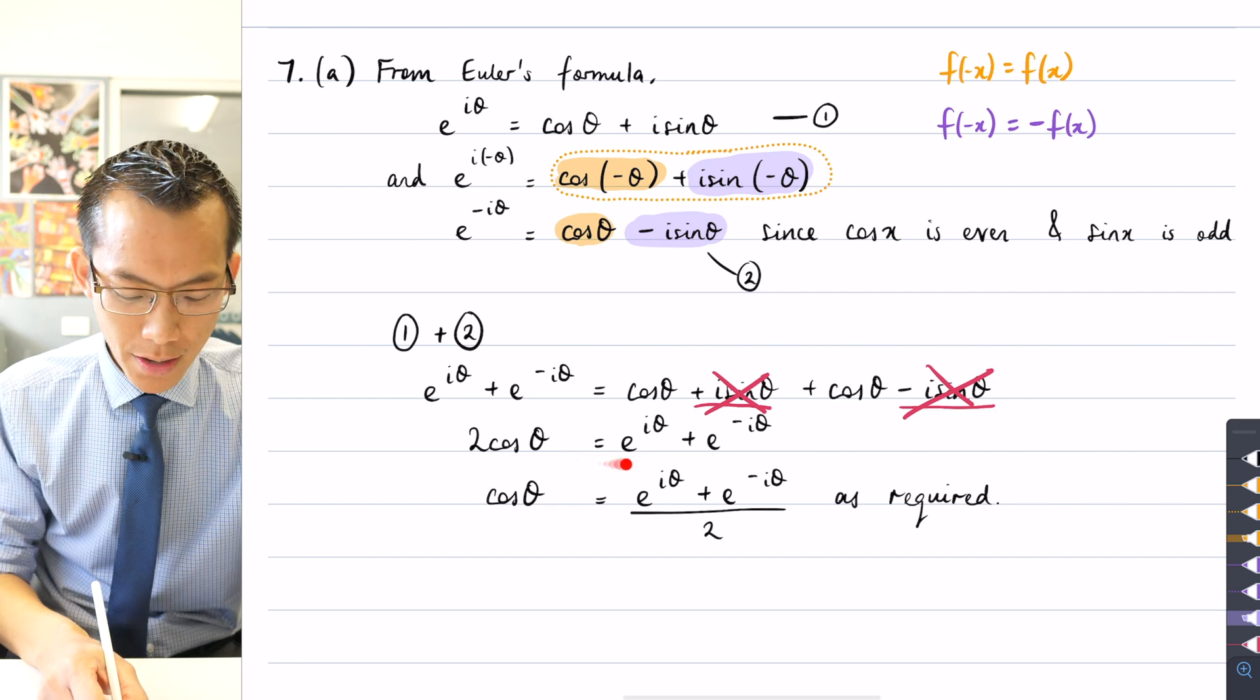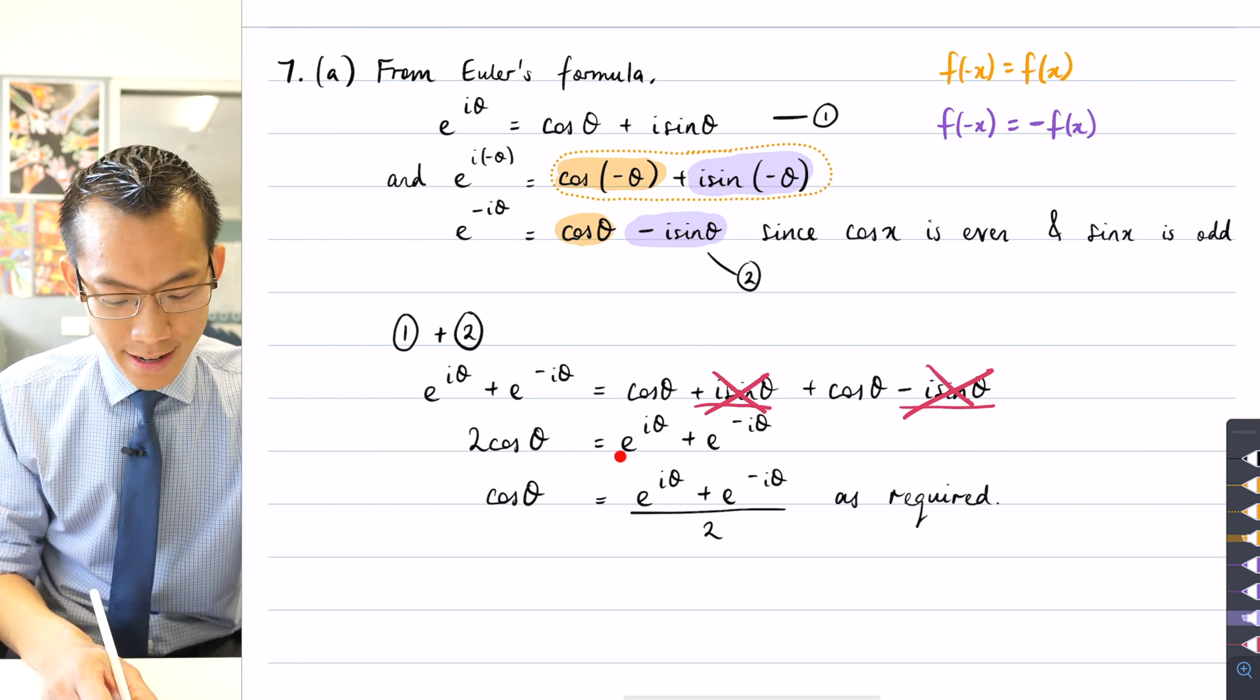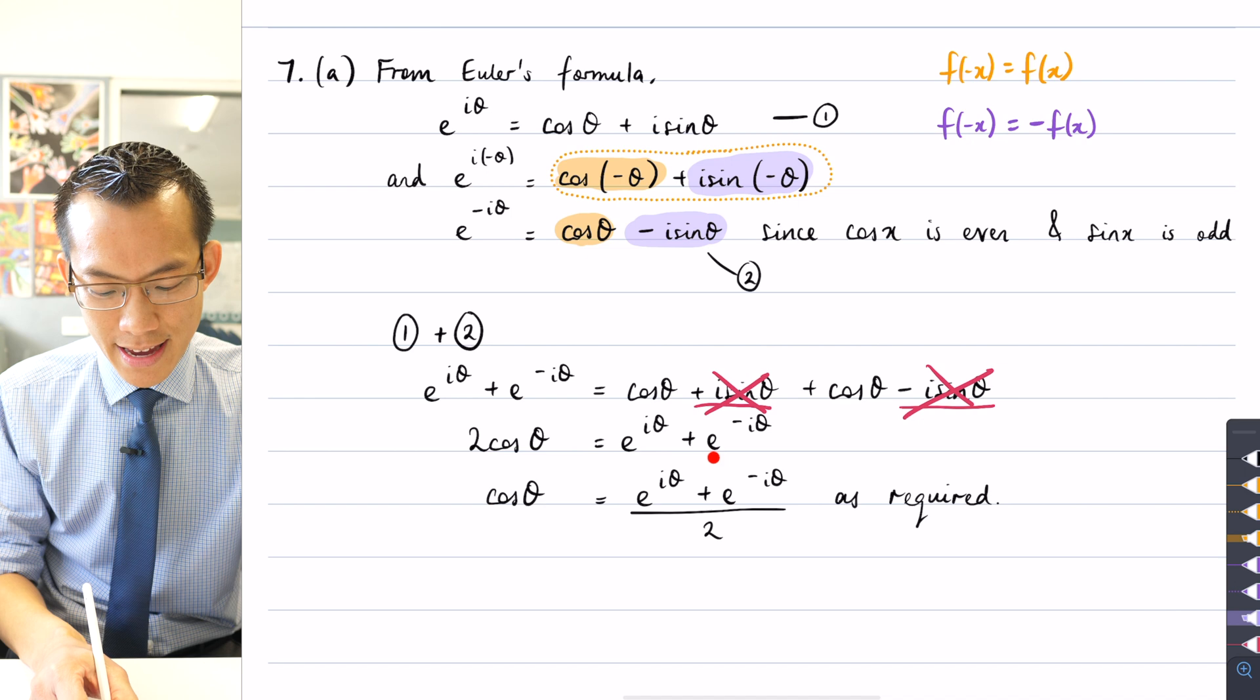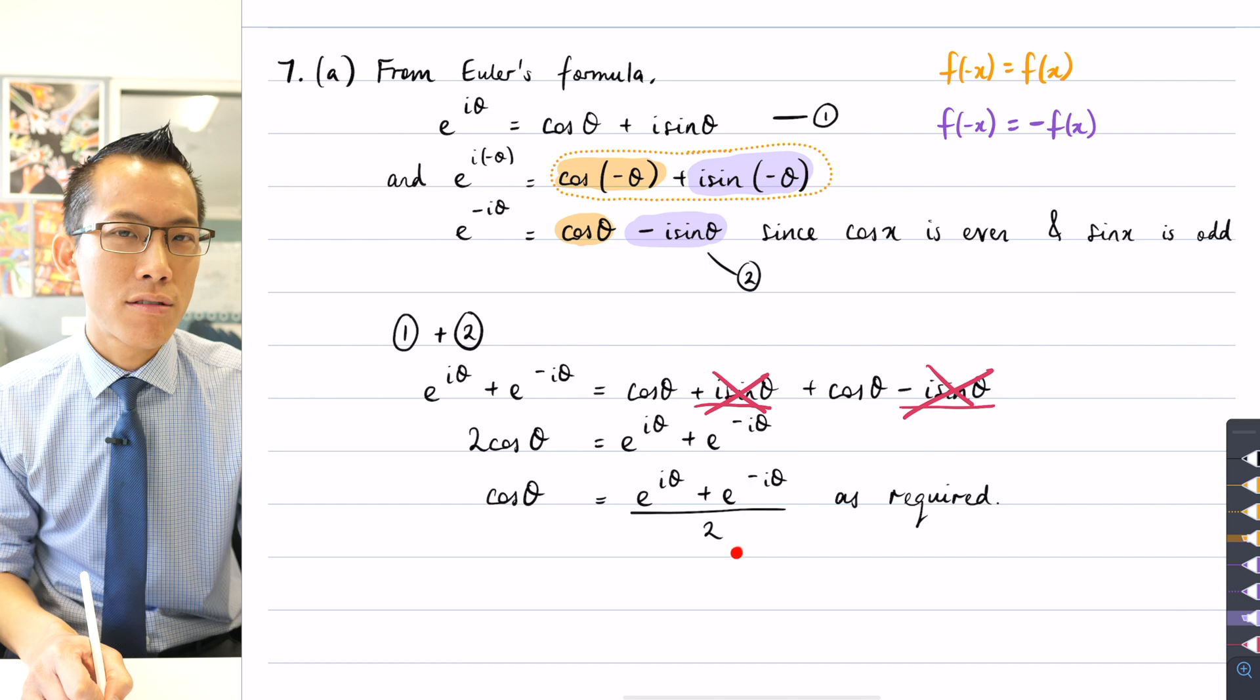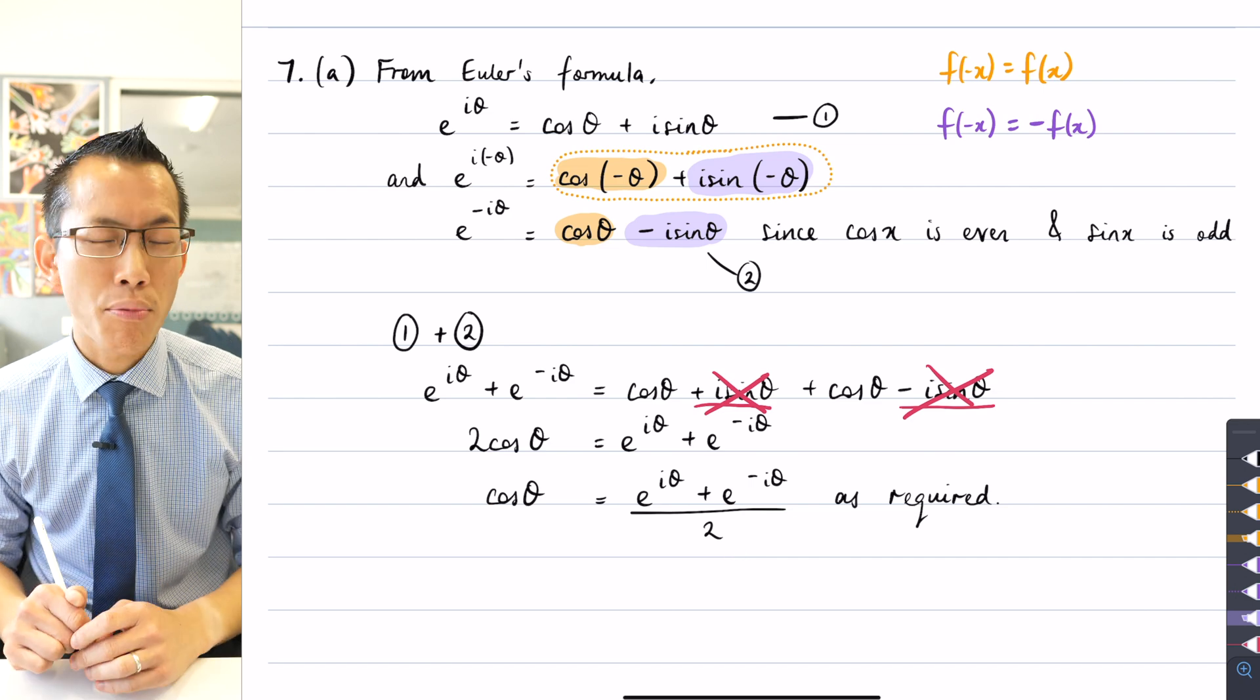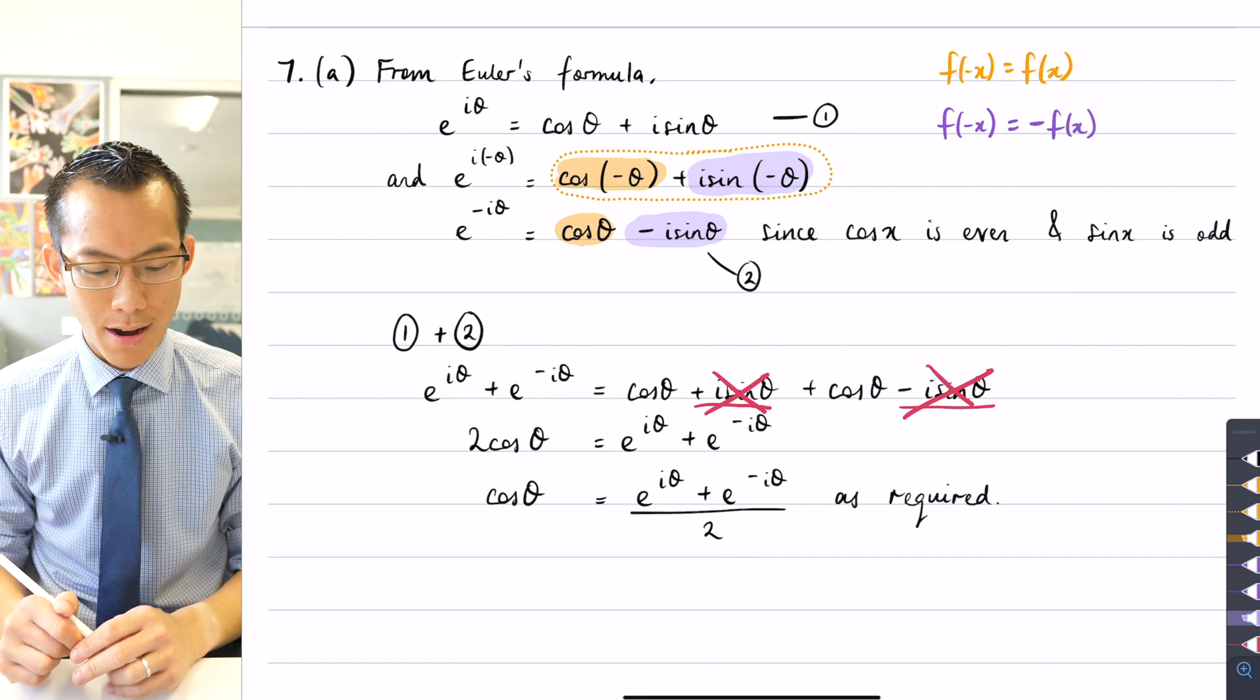I've got e^(iθ) + e^(-iθ), which I got from the left hand side, no change there, and then I just divide through by two. So this was a pretty straightforward two marks.